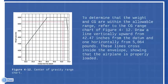To determine that the weight and CG are within allowable range, refer to the CG range chart of Figure 4-12. Draw a line vertically from 42.47 inches and horizontally from 5,064 pounds. These lines cross inside the envelope, showing the airplane is properly loaded.